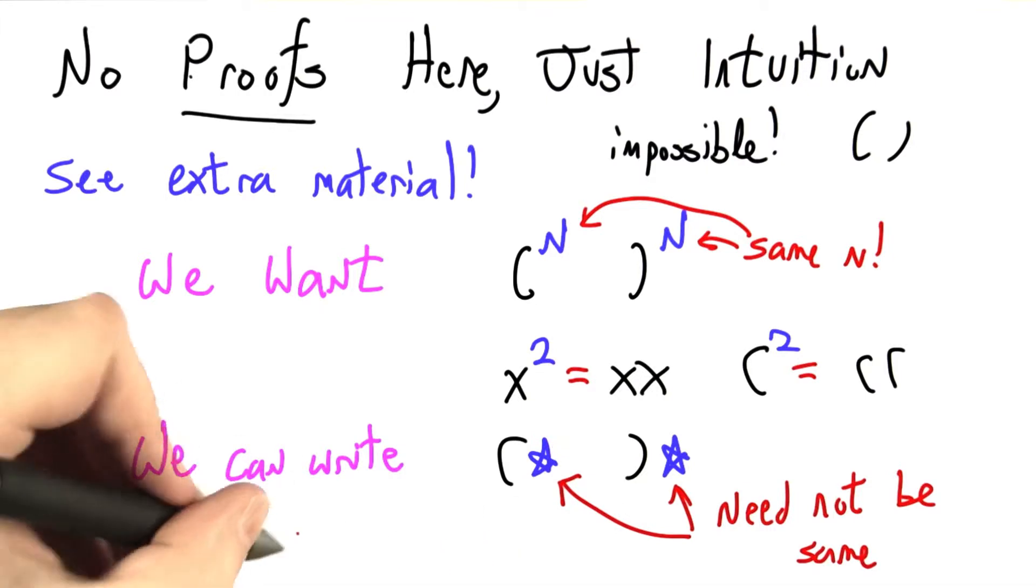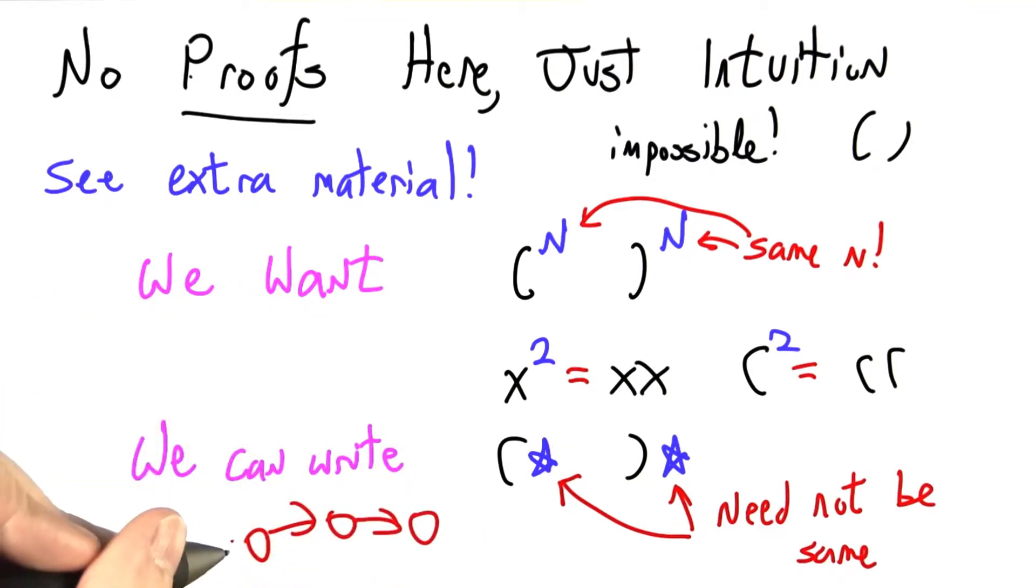In fact, if you think about the finite state machine interpretation of regular expressions, remember when we were simulating finite state machines, the only thing we really had to remember was where we currently were and what the input was. We didn't really remember where we'd come from. And in order to match up the same number of opens and closes, we'd have to remember where we came from. Regular expressions just don't have that kind of memory.